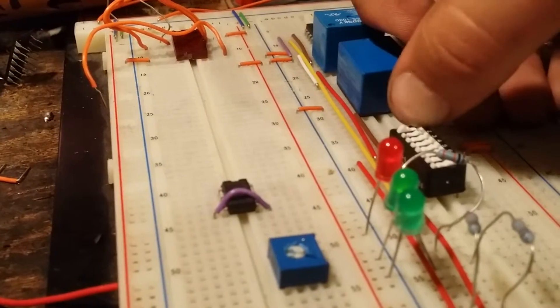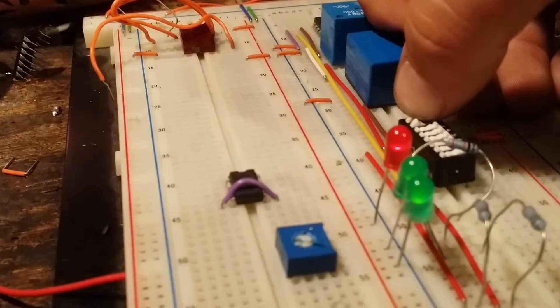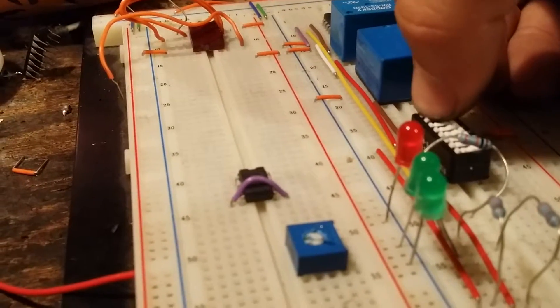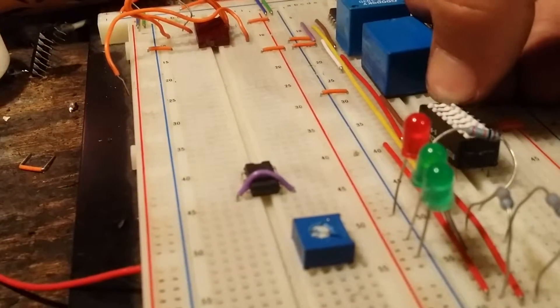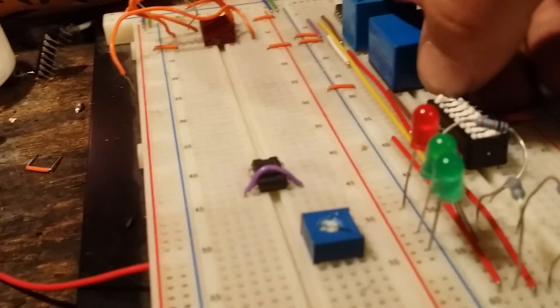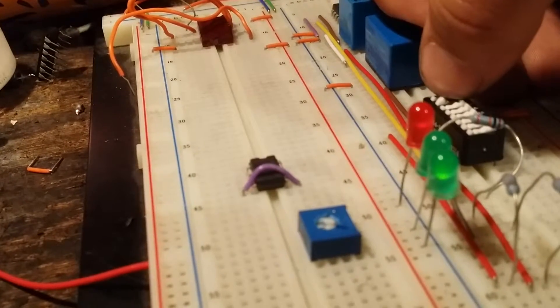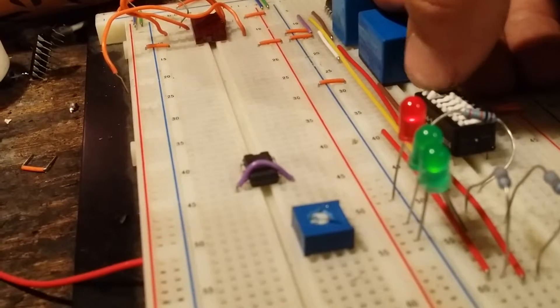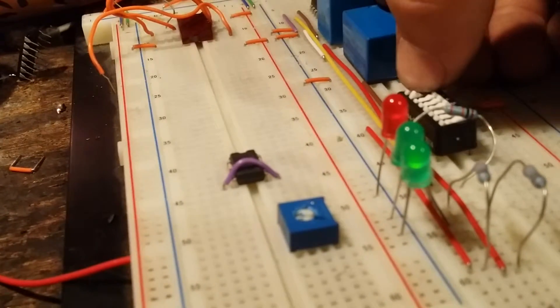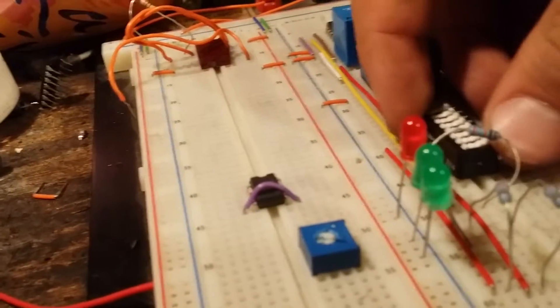So 1 plus 1 equals 1. 0 plus 0 equals 0. 1 plus, well, 0 plus 1 equals 0. 1 plus 0 equals 0. 1 plus 1 equals 1. 0, 0 plus 0 equals 0. Just like that.